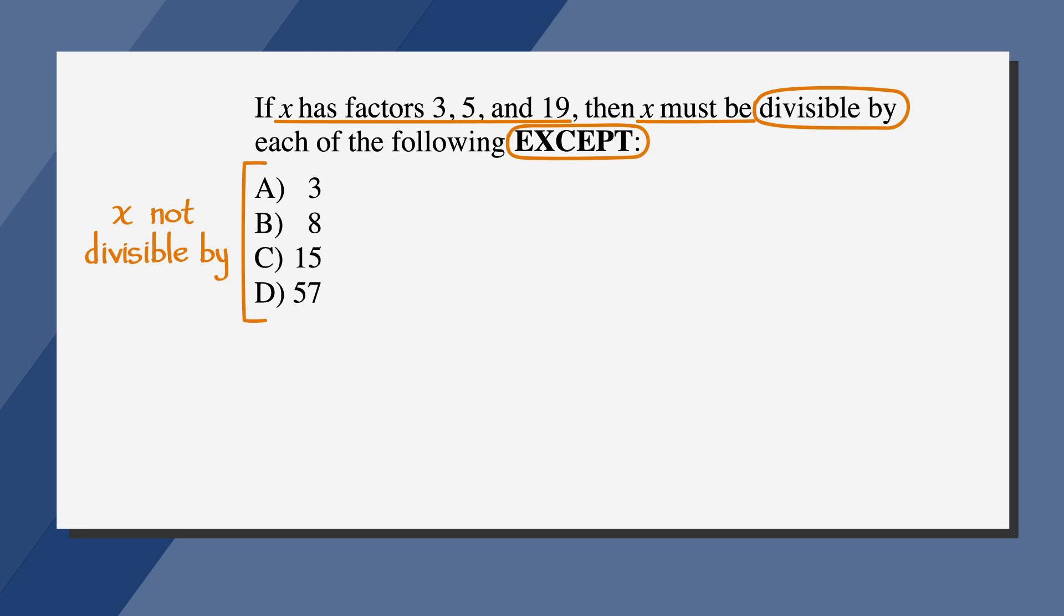Now we want to pick a number that will work for x. Since we know that 3, 5, and 19 are all factors of x, let's pick the product of all three. You won't be able to use a calculator on one of the math sections, so let's practice doing this multiplication by hand. 3 times 5 times 19. We'll start with 19 times 5, which is 95. And 95 times 3 equals 285.